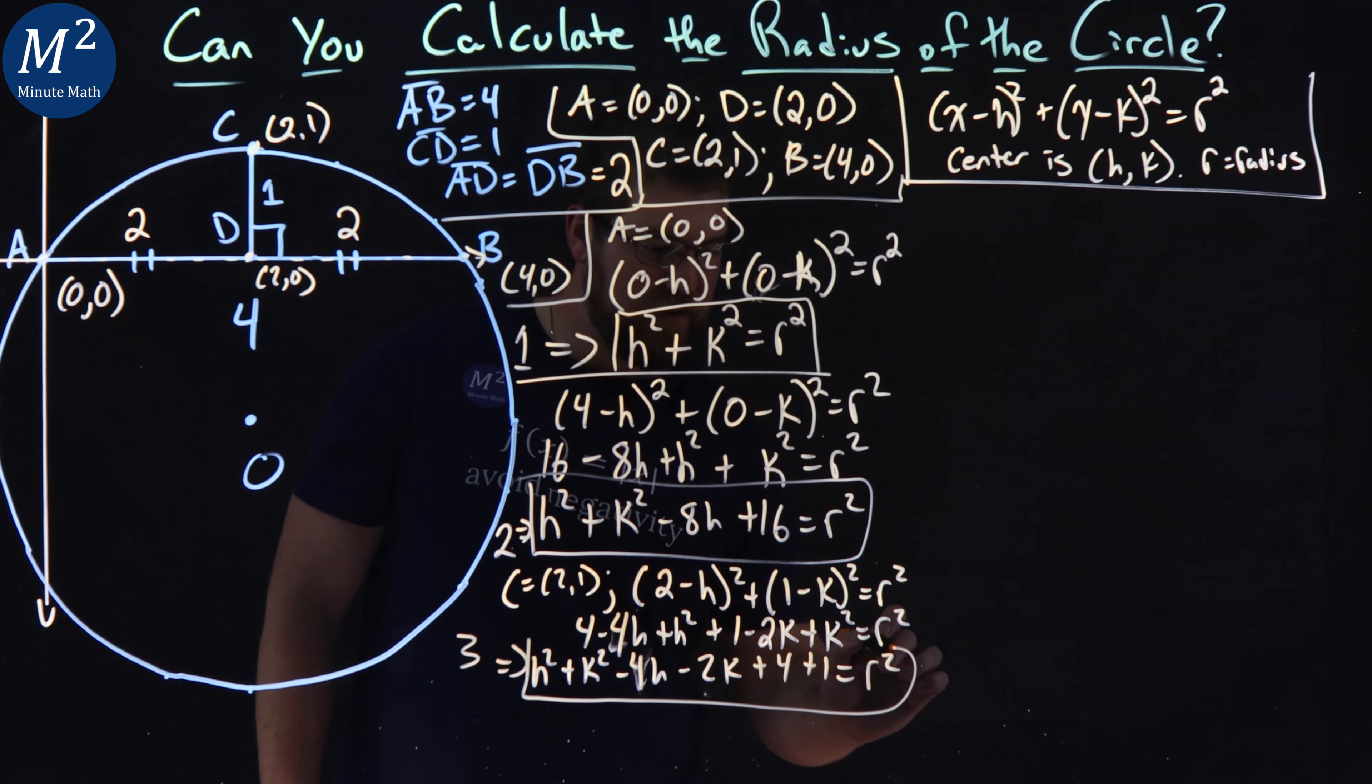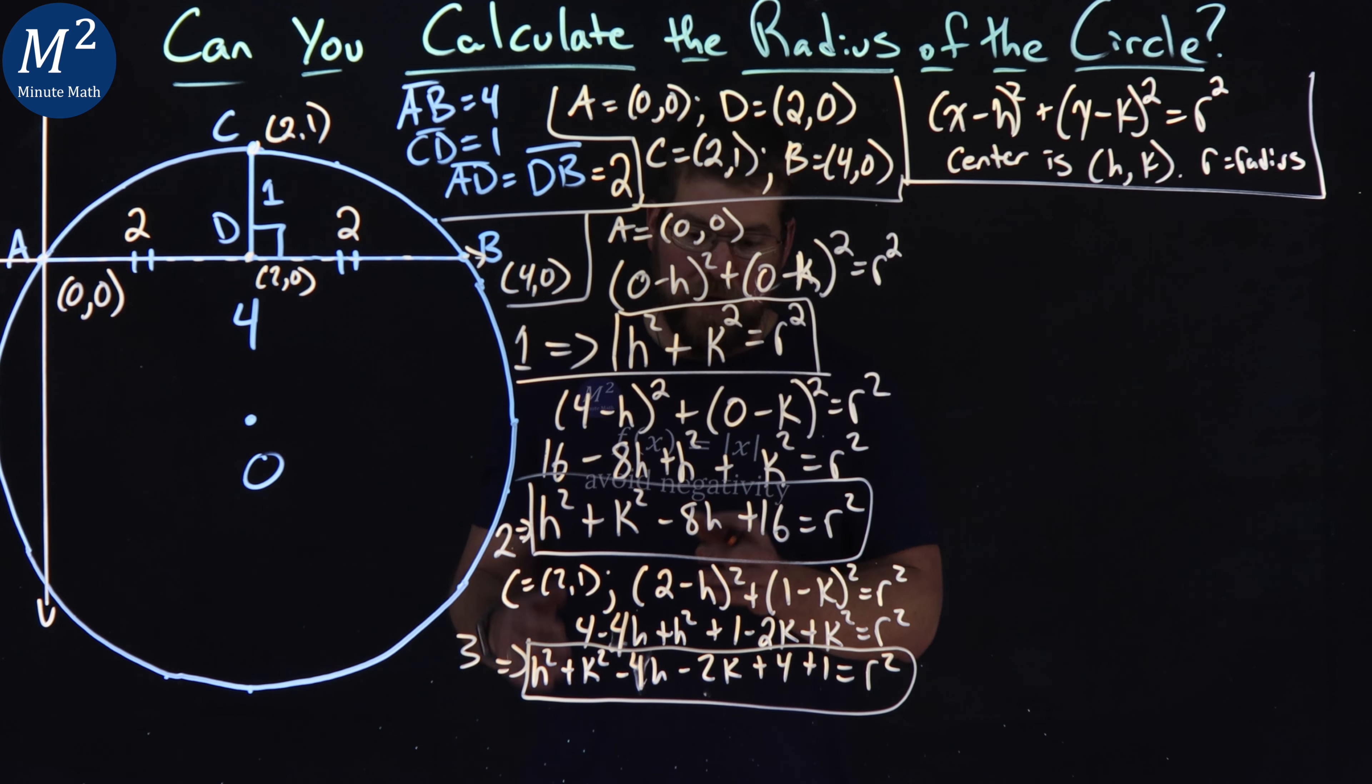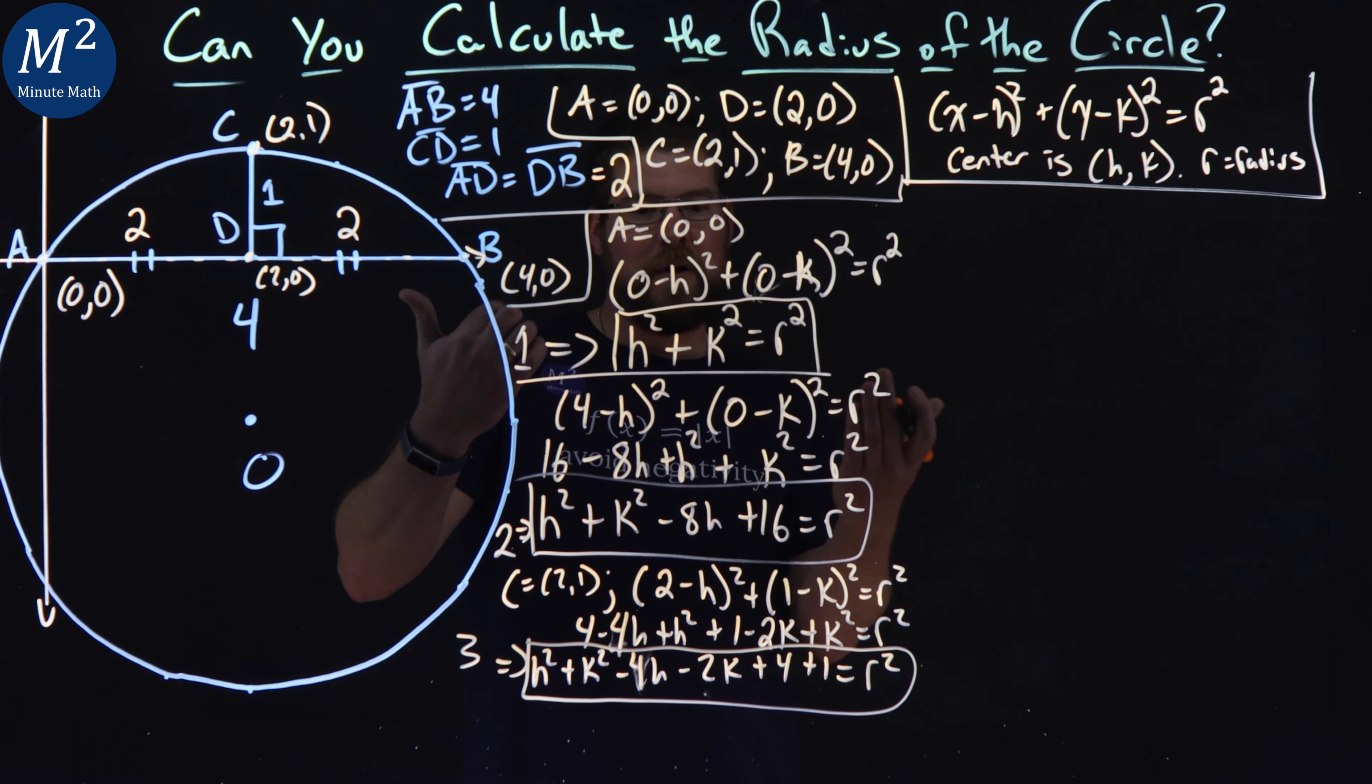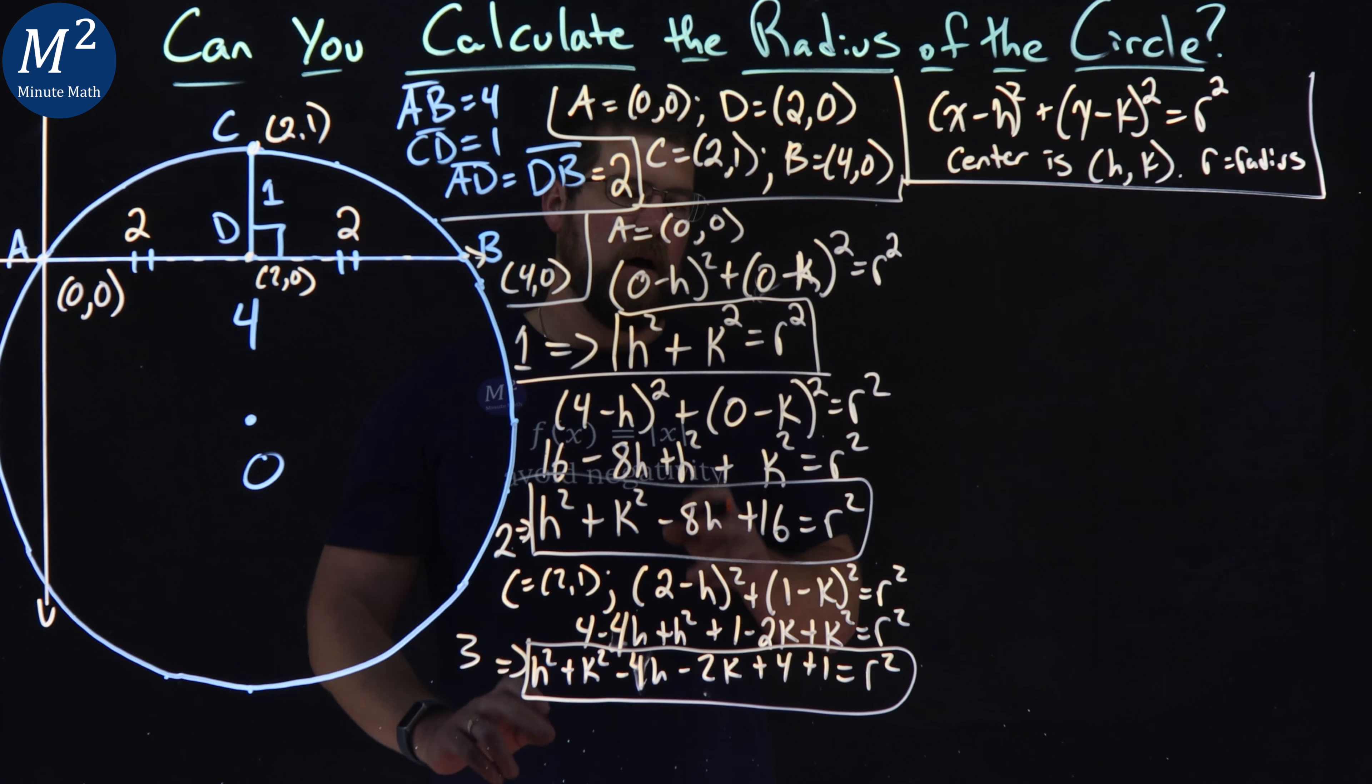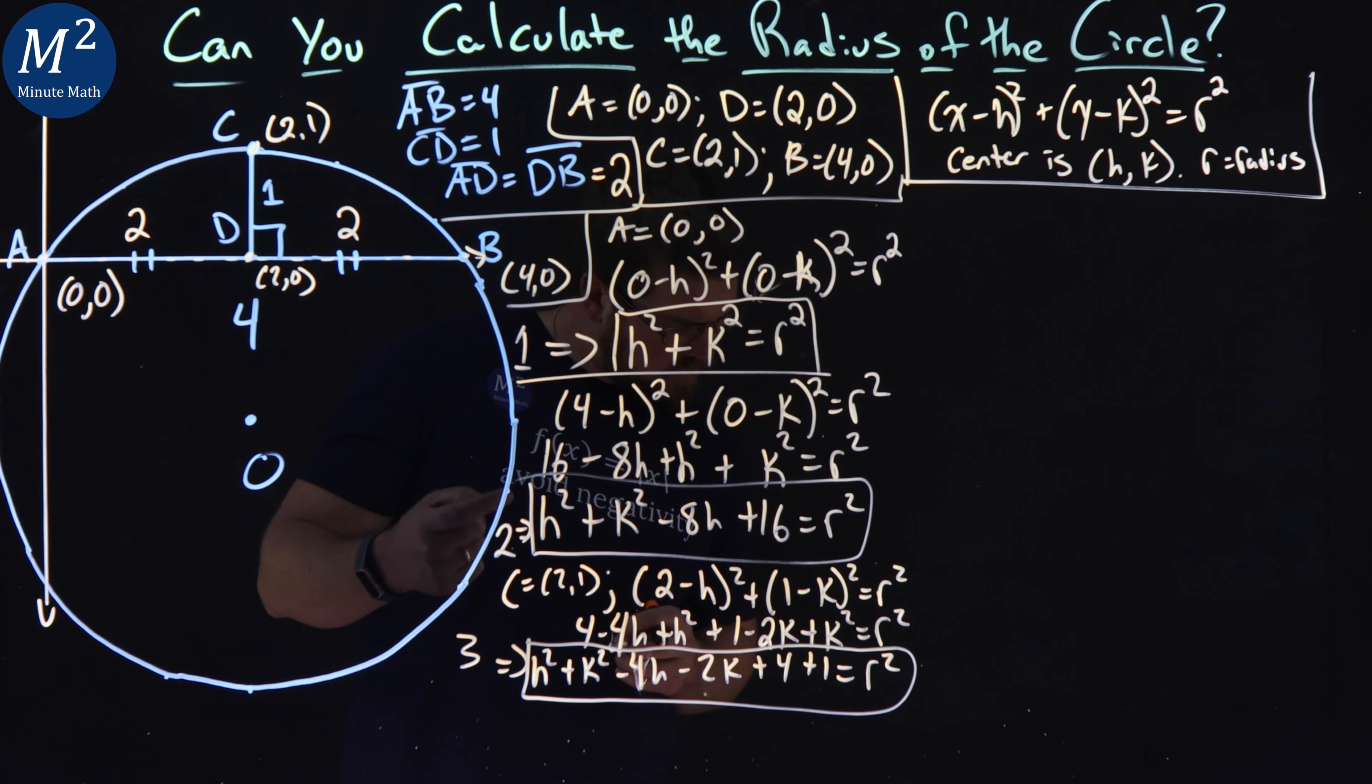Then minus 2H minus 2K. Is it 2H or 4H? Oh, it's 4H. Oh, I almost made a mistake. Good thing I checked my notes pretty quickly. That's 4H. If you caught that mistake, let me know down in the comment section below.